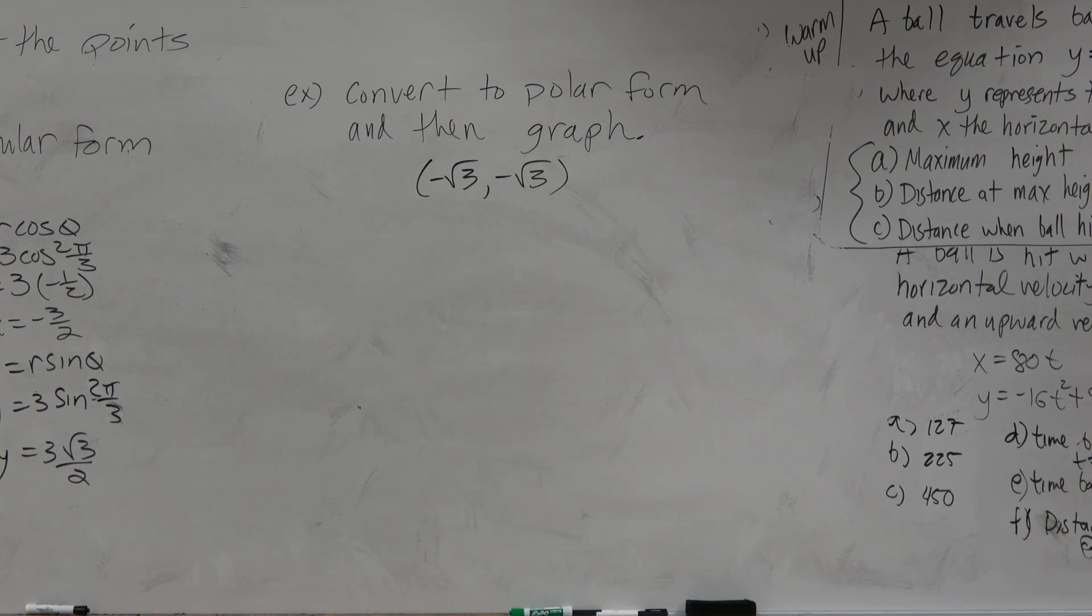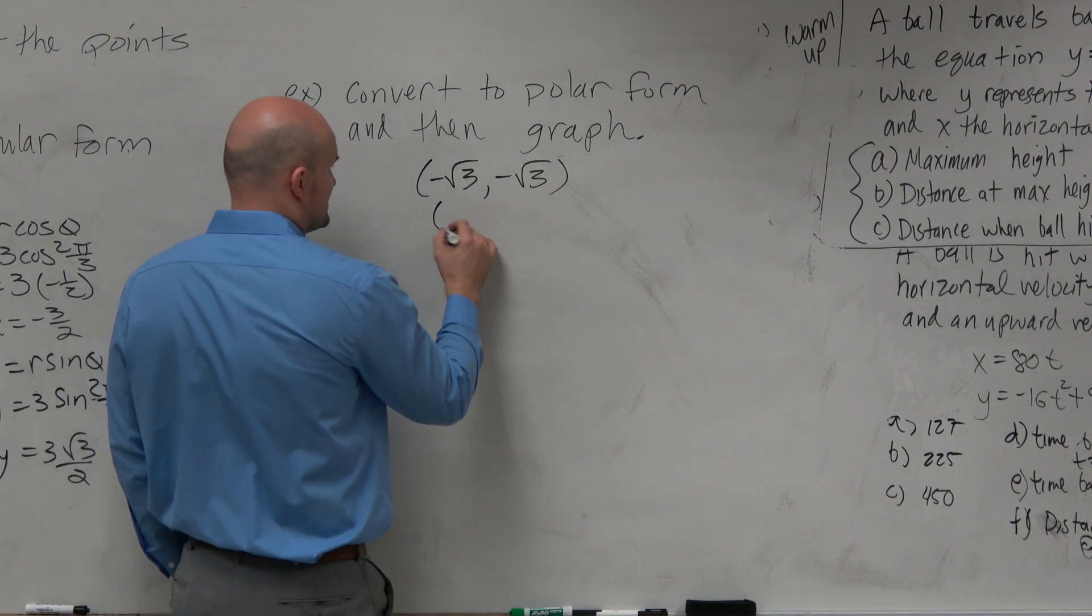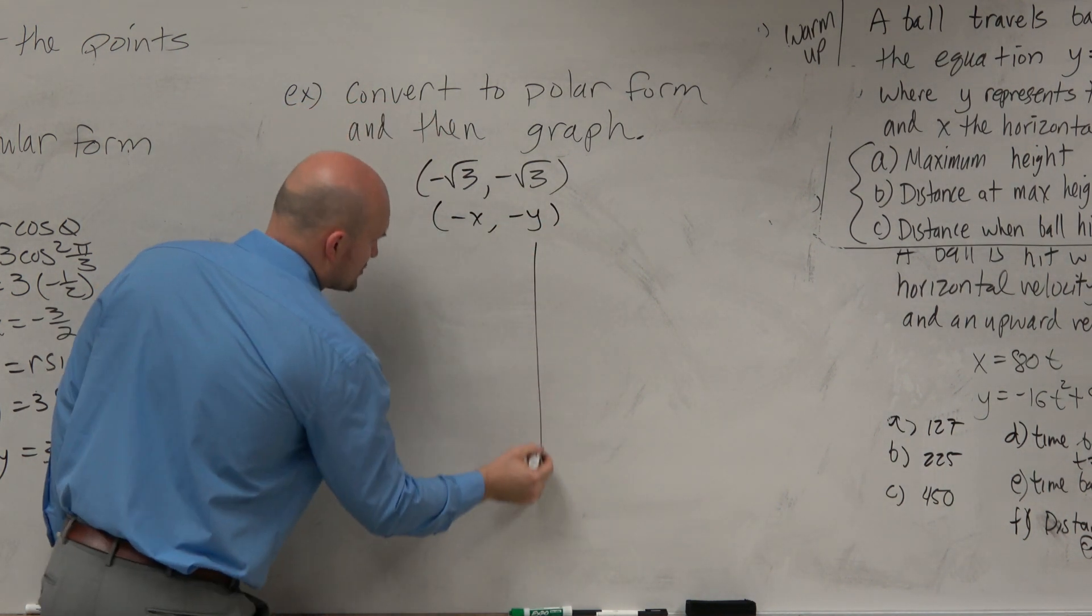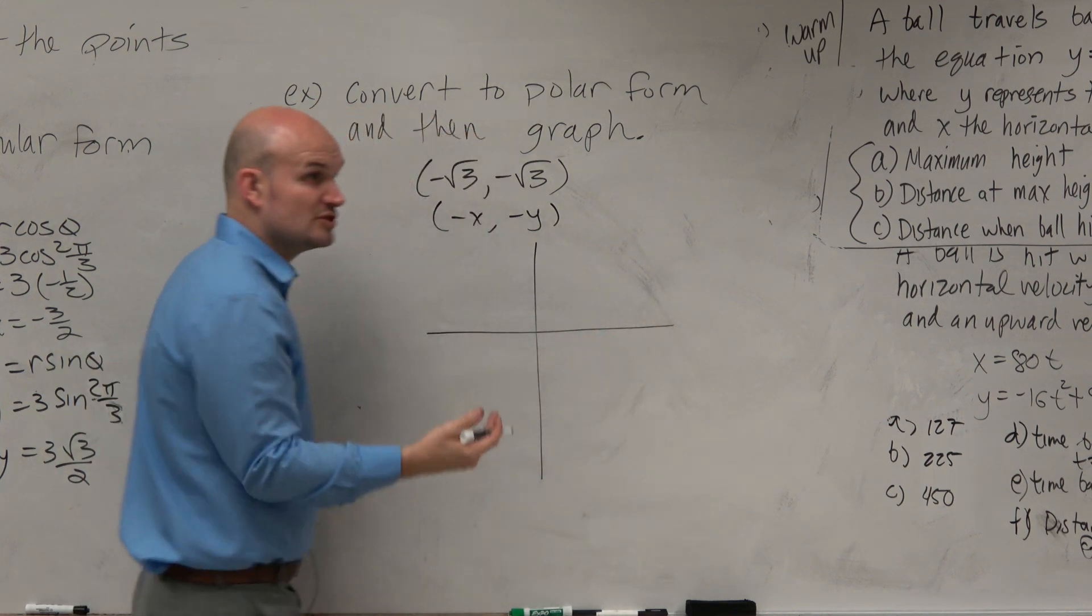All right, so let's convert to polar form and then graph. So now, this nice one, this is in a rectangular form. So this is negative x and a comma negative y. So which quadrant should this point be in? Third. So third quadrant.